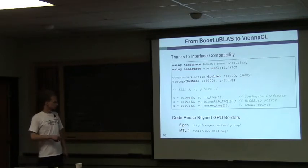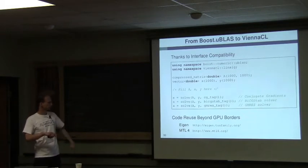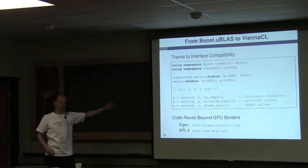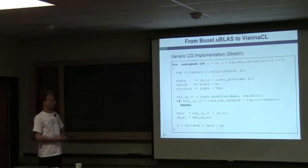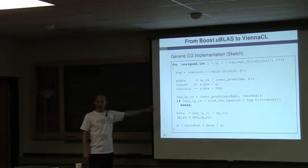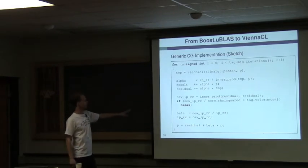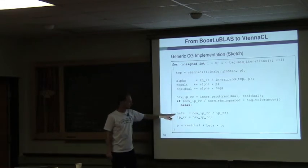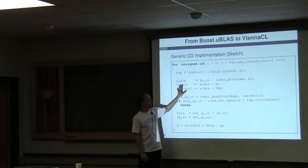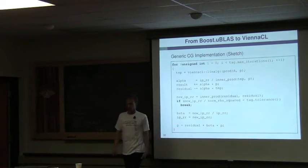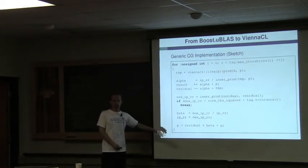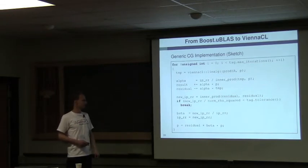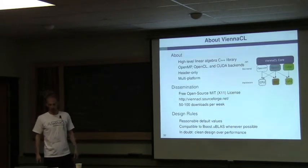It's not just restricted to uBLAS — you can do the same with the Eigen library or MTL4, throwing their types right into the solve function. To convince you: the CG implementation uses only high-level operator overloads with no dirty tricks. There's a bit of generics — a `prod` function ensures the correct matrix-vector product routine is called — but everything else is essentially directly comparable to your favorite math textbook on iterative solvers, which makes debugging particularly convenient.